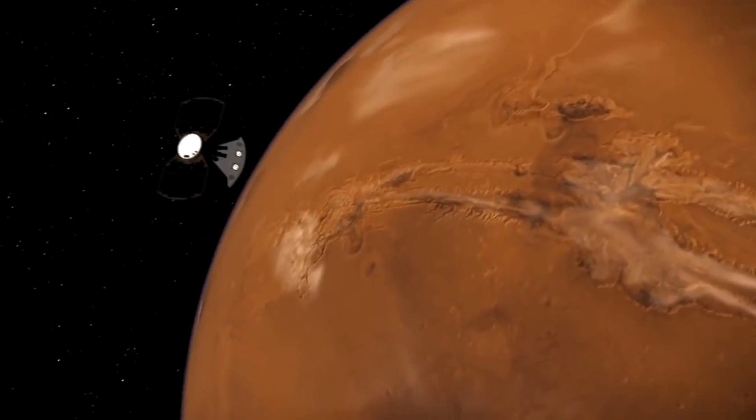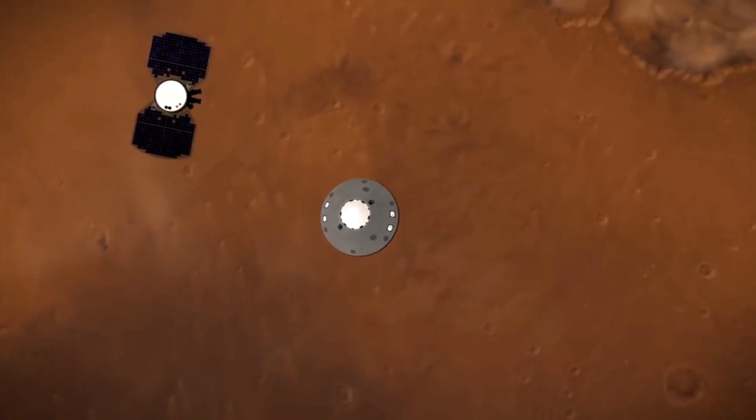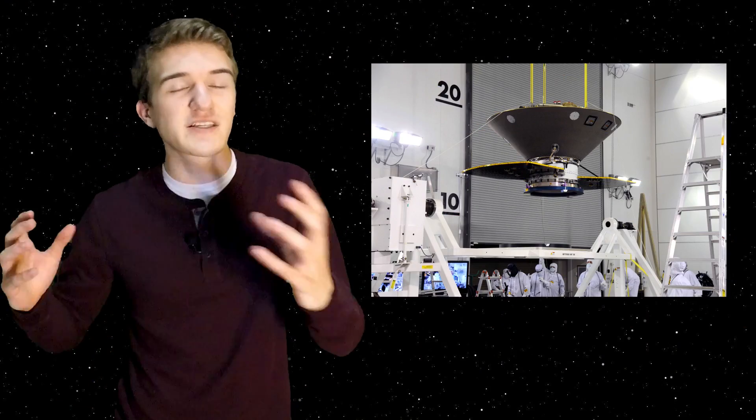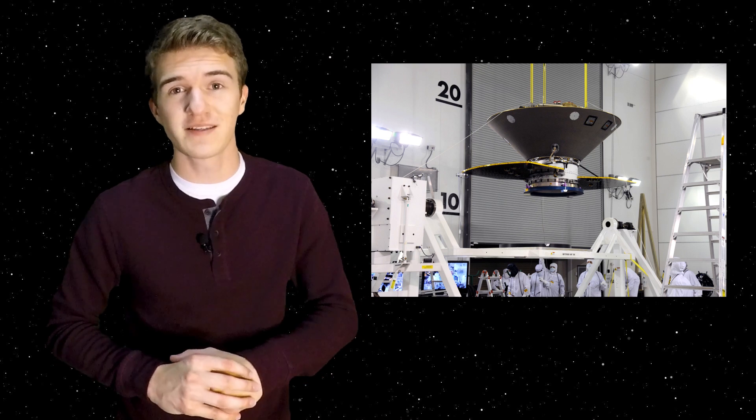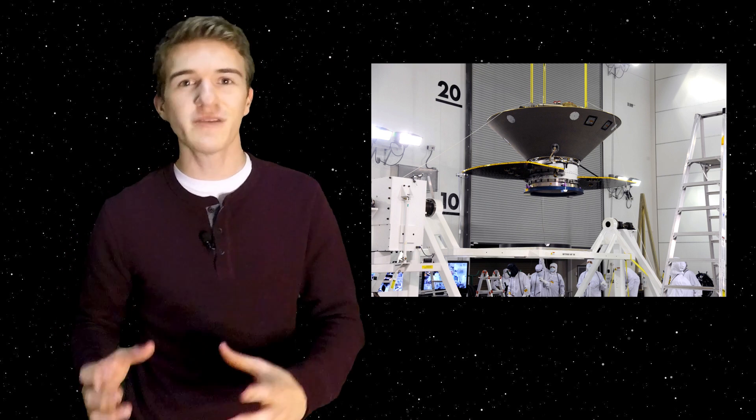The first thing the spacecraft will do when it reaches the Martian atmosphere is get rid of its cruise stage. This cruise stage exists because the InSight lander is inside the capsule, not exposed to outer space. Therefore, they need different power systems and communication protocols to ensure the spacecraft stays on trajectory. But once we enter the atmosphere, we no longer need that stage, so we can get rid of it.